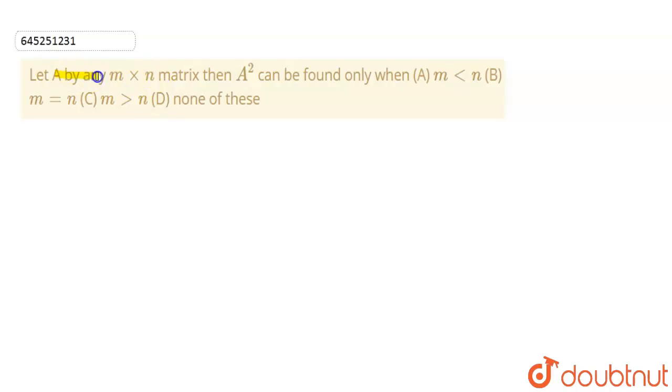So this is the question: Let A be any m×n matrix, then A² can be found only when: Option A: m < n, Option B: m = n, Option C: m > n, Option D: none of these. So now we have to find A² and tell the possibility.